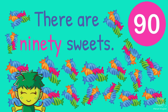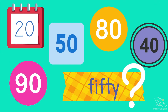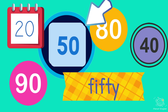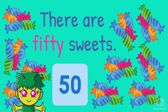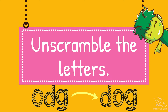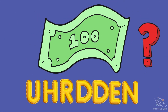There are 90 sweets, which is 50. 5, 4, 3, 2, 1. There are 50 sweets. Now unscramble the letters — what's this? It's 100.